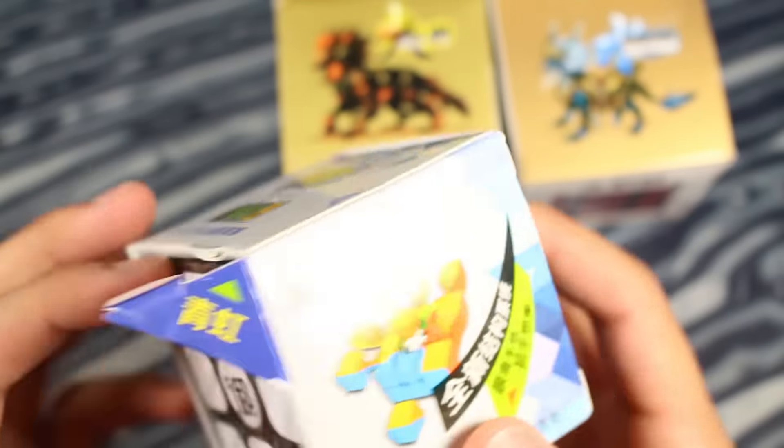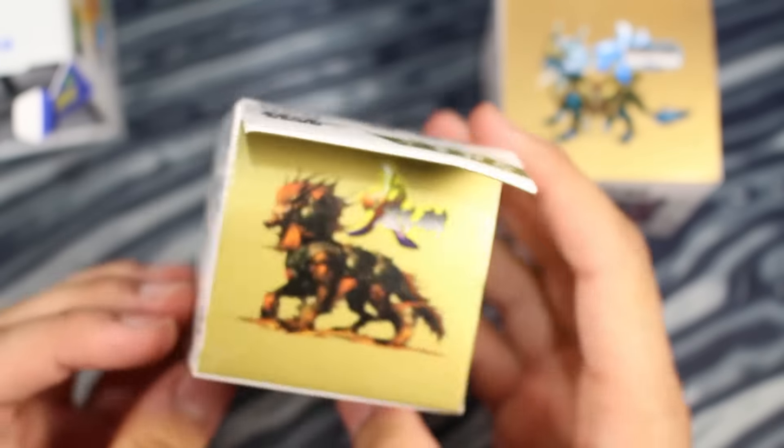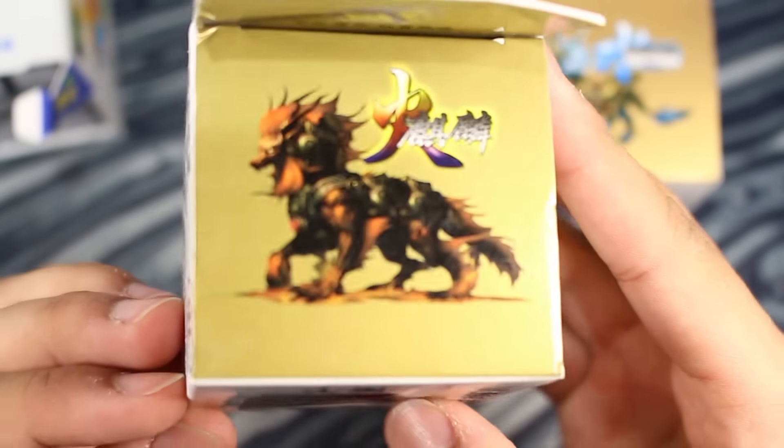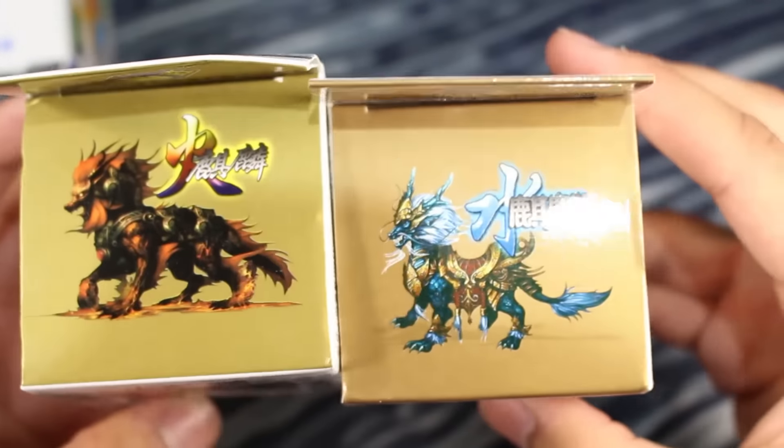Also, we've got here what I believe is a YuXin Fire. You can tell it looks pretty cool with that creature on the front. And also this is the YuXin Water. So I guess we can just start with the Kung Fu 3x3.